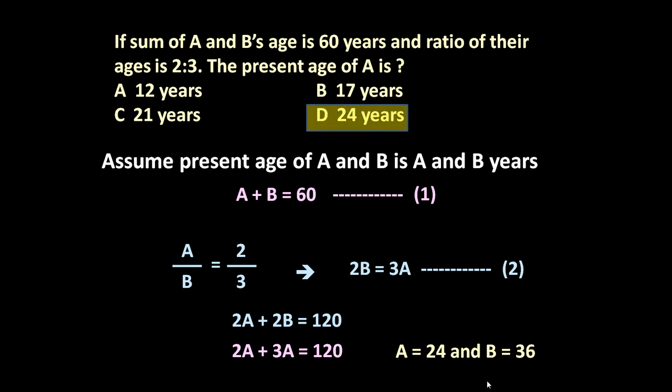So present age of A is 24 and present age of B is 36. The question is asking present age of A, it is 24 years.